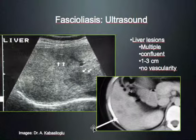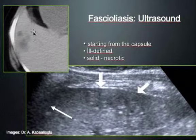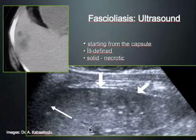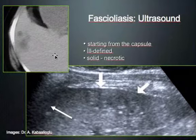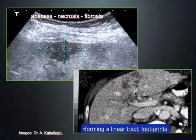On ultrasound, in fasciola you may find multiple liver lesions, confluent, size 1–3 cm, with no major vascularity. On CT, the lesions start from the capsule — reflecting the worm's path: they perforate the bowel, enter the peritoneum, re-enter the liver through the capsule, and dig toward the biliary system. They form linear tracks as they move toward the more central areas.